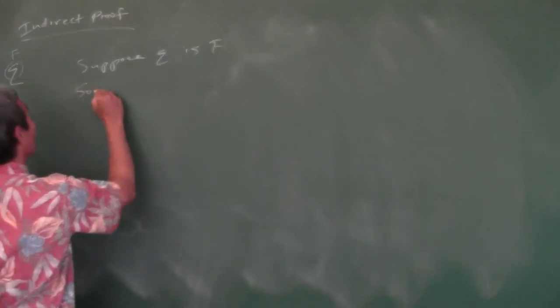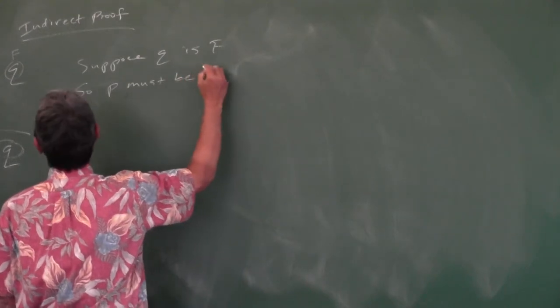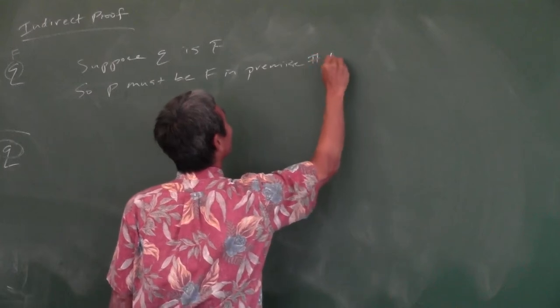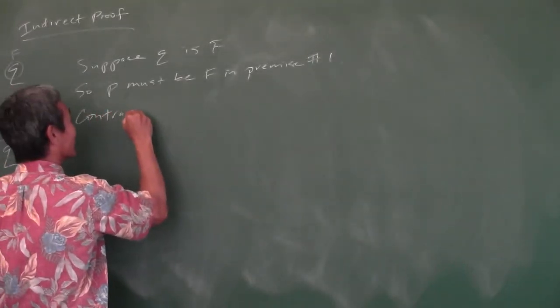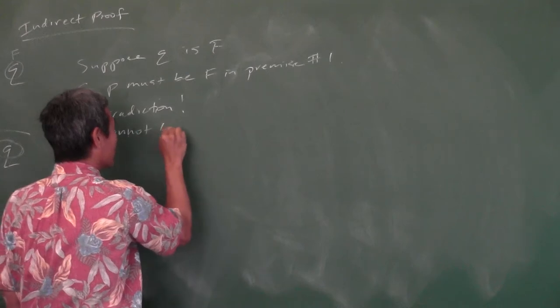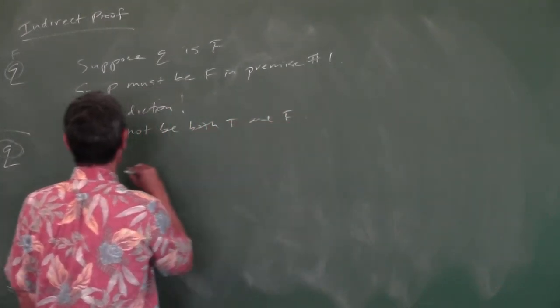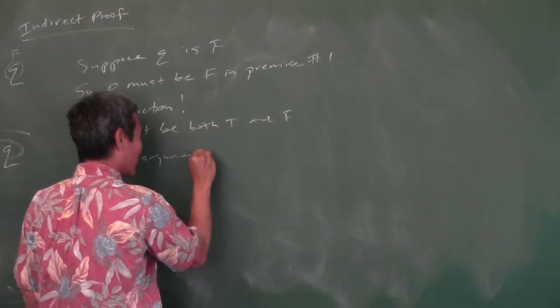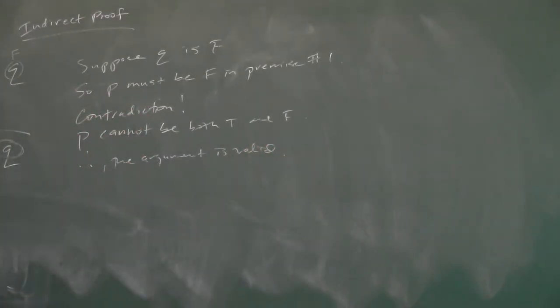Our premise is a statement known to be true. So P must be false in premise one. But premise two says P is true. How can a statement be both true and false? That's the contradiction — and that's what you want. Contradiction! P cannot be both true and false. Therefore, the argument is valid.